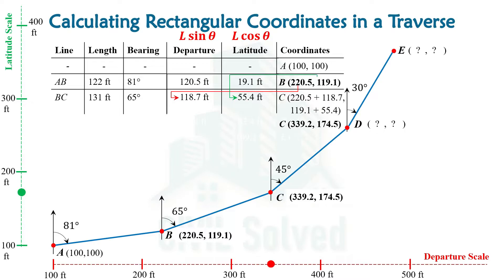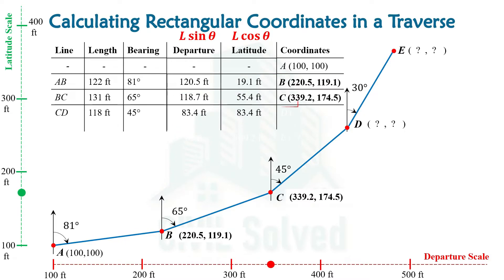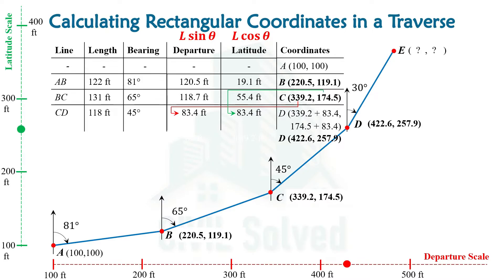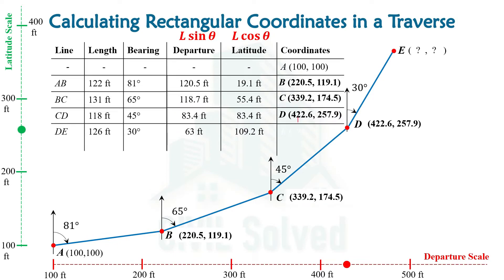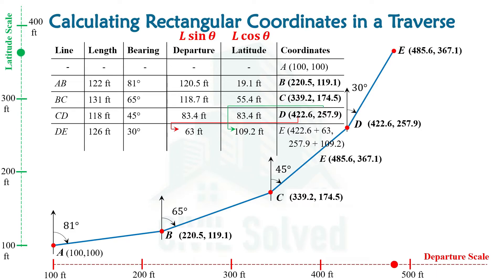Moving further for the calculation of the coordinates of point D, we need to calculate the latitude and departure of line CD, and those are added with the previous point C to get the coordinates of D. Similarly, the departure and latitude for line DE are calculated and added with point D to get the coordinates of point E, and the same can be shown on the departure and latitude scale.